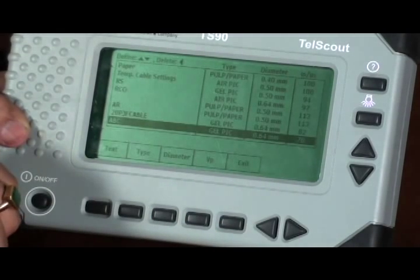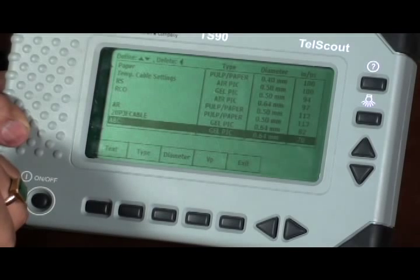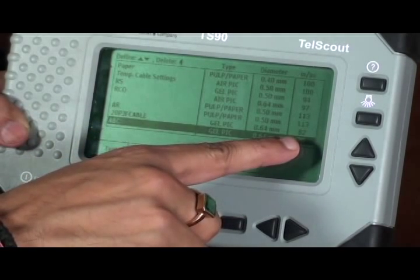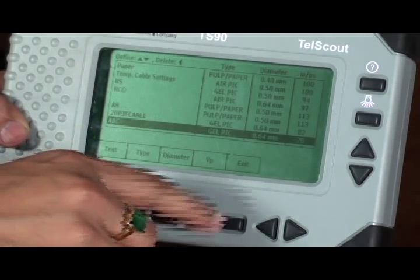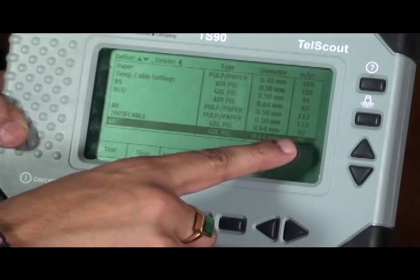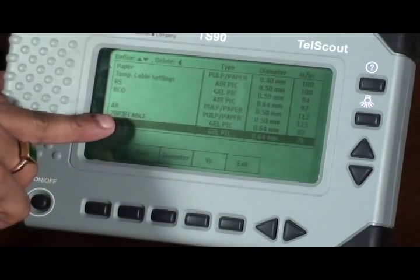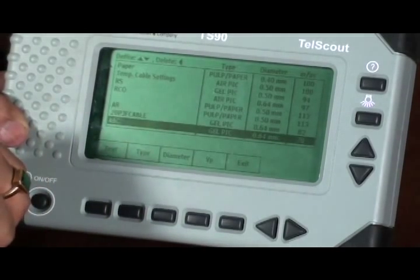Some velocity of propagation against this cable would randomly appear, which in this case is 70 meters per microseconds. Now we press exit button.